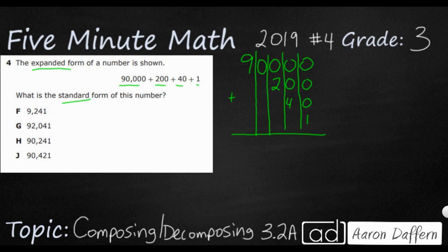So we've got 1, that's a 4, that's a 2, that's a 0, and that's a 9. So the answer is 90,241. But that's the long way.